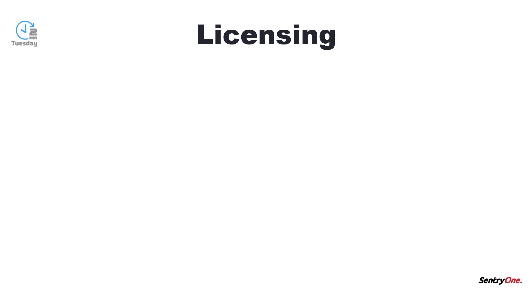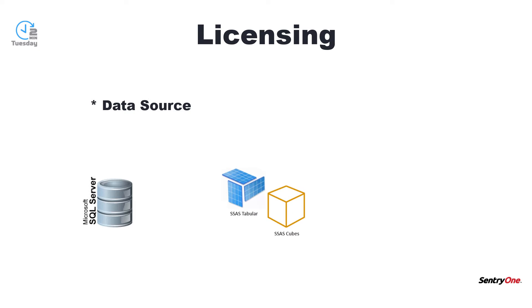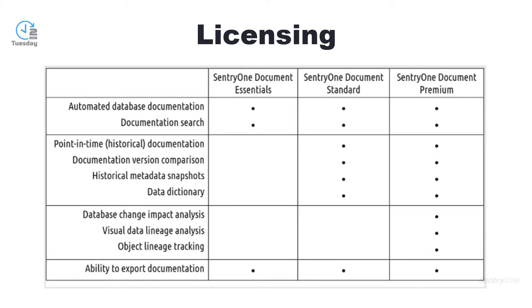SentryOne Document is licensed per data source, such as SQL Server, SSAS, Power BI, and more. There are three different tiers that your license can fall under. These tiers and the functionality available within them can be viewed here. For the remainder of the videos you will receive, we will be covering the full feature set available within SentryOne Document.